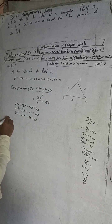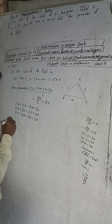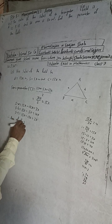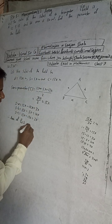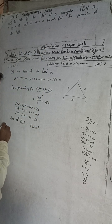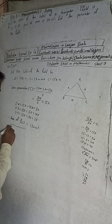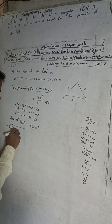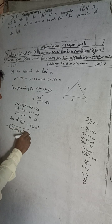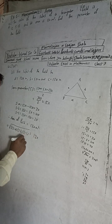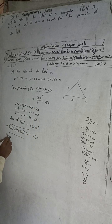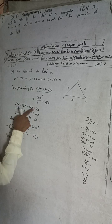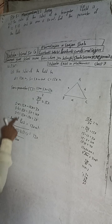Therefore, the area of the field equals root under s(s−a)(s−b)(s−c) = 120 meters square. Substituting: s = 15x, s−a = 3x, s−b = 10x, s−c = 2x.